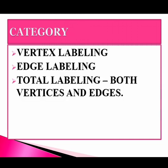There are three categories of labeling a graph: first is vertex labeling, then we have edge labeling, and then total labeling where we label both the vertices as well as the edges. All these labelings are carried out with certain conditions.